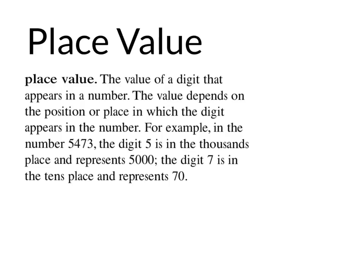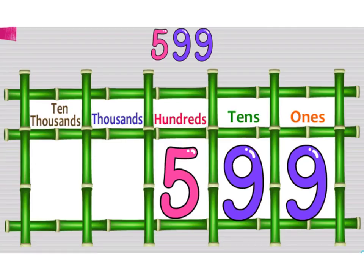Place value is a difficult concept, but is important throughout many of the grades of school. It starts at a simpler level — for example, with a three-digit number or even a two-digit number in our younger primary grades. Students have to understand that there's a number in the ones place, the tens place, and the hundreds place.